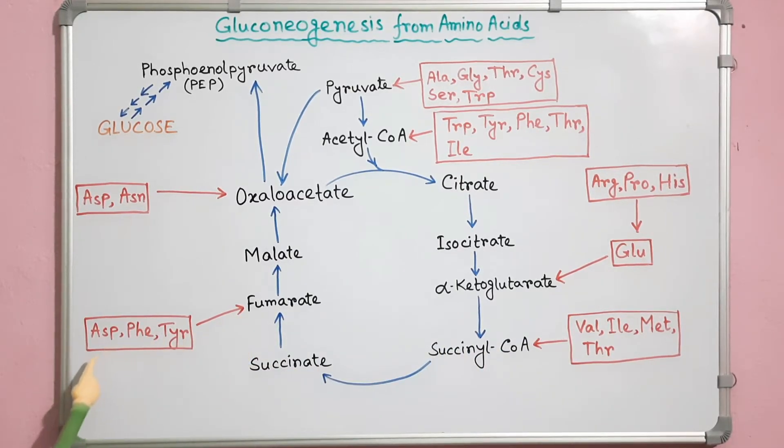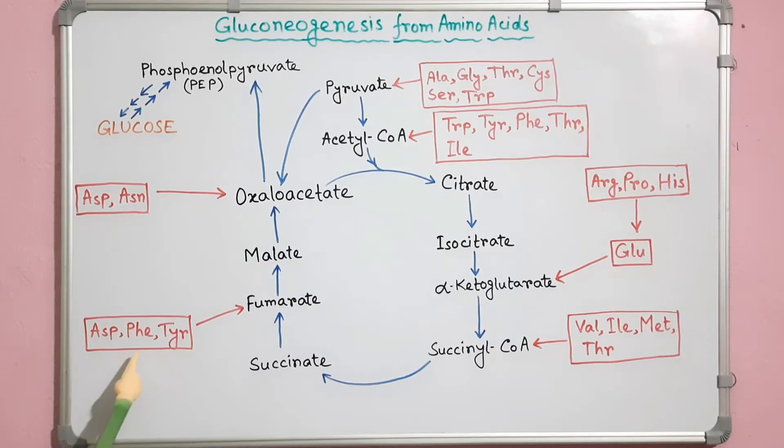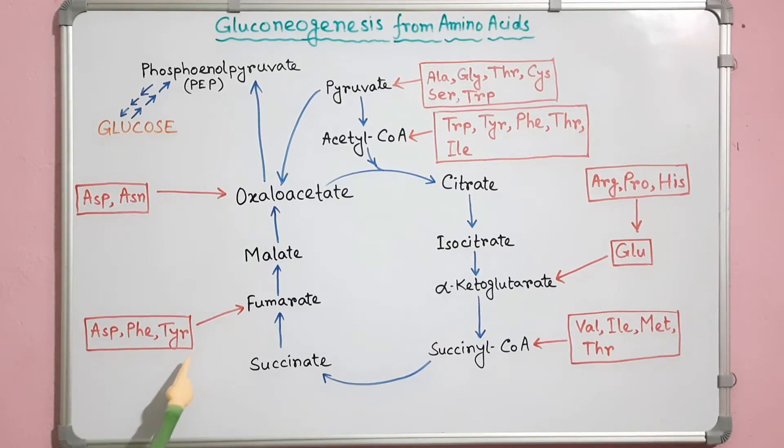Fumarate can form from aspartate, phenylalanine, and tyrosine. Now, alpha-ketoglutarate, succinyl-CoA, and fumarate are converted to malate through the TCA cycle in mitochondria.